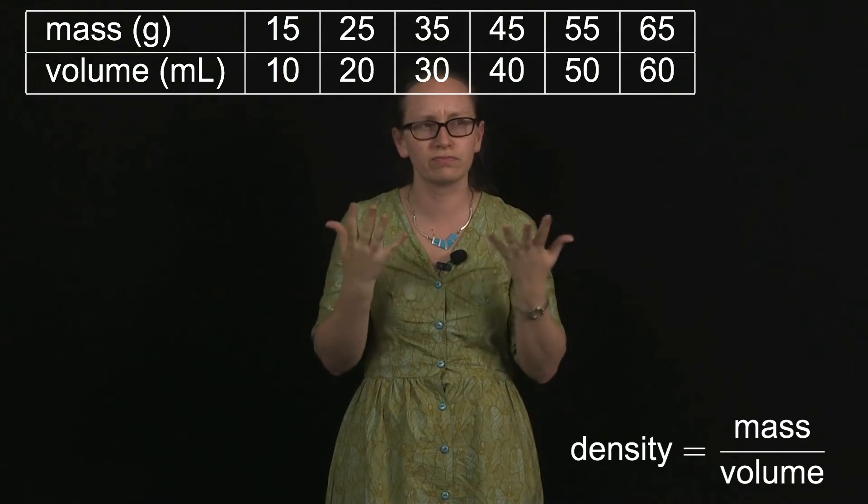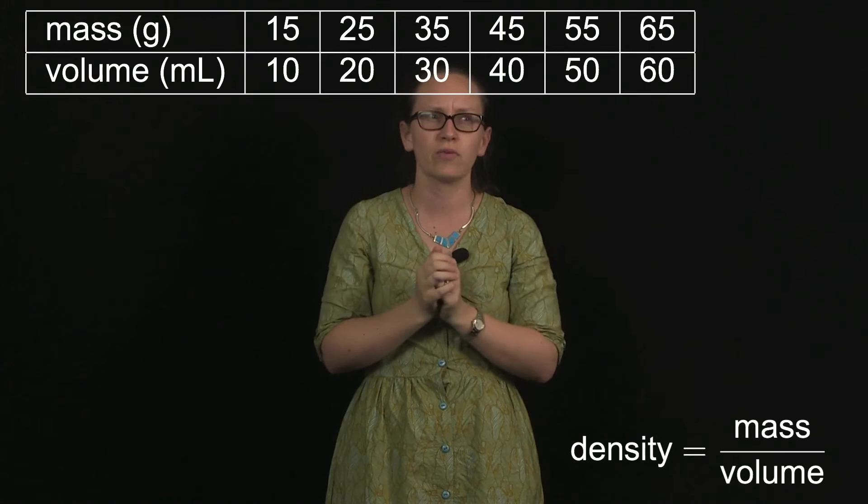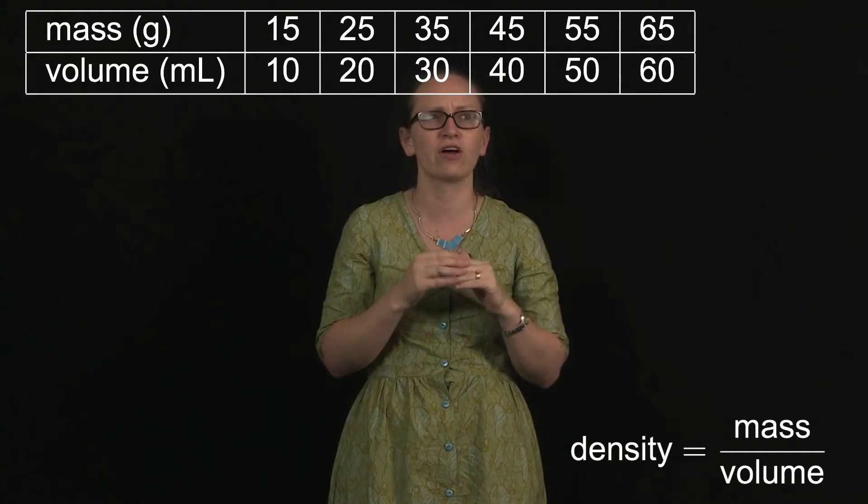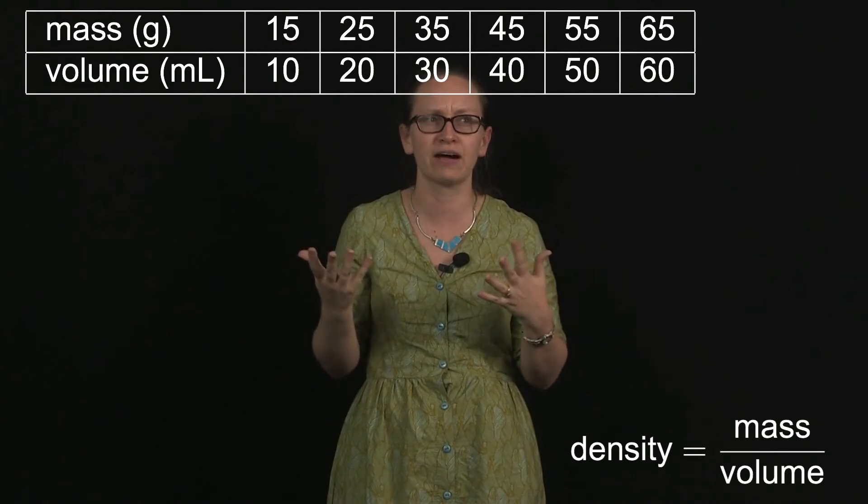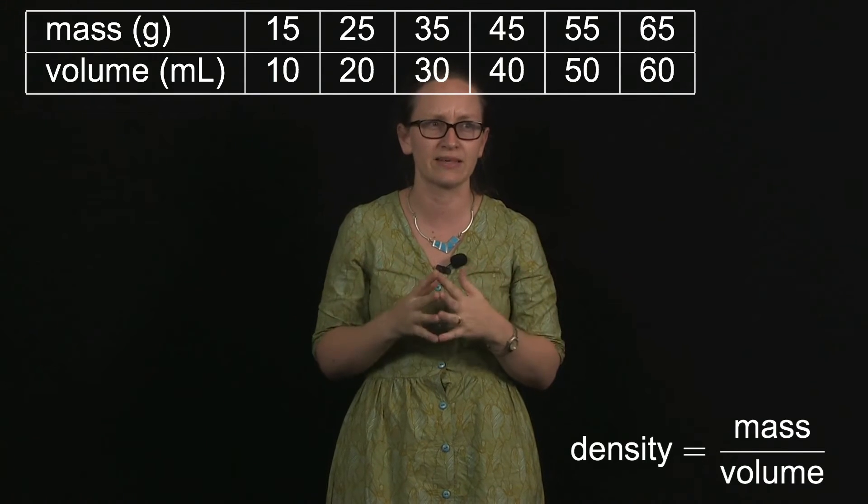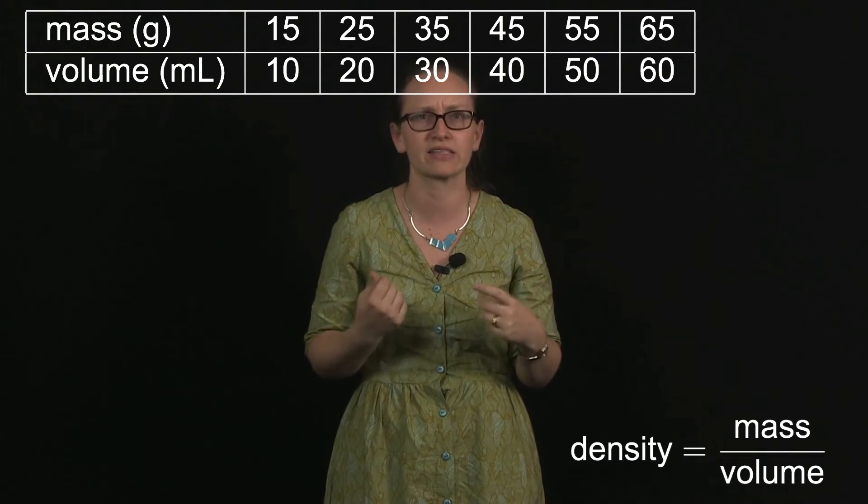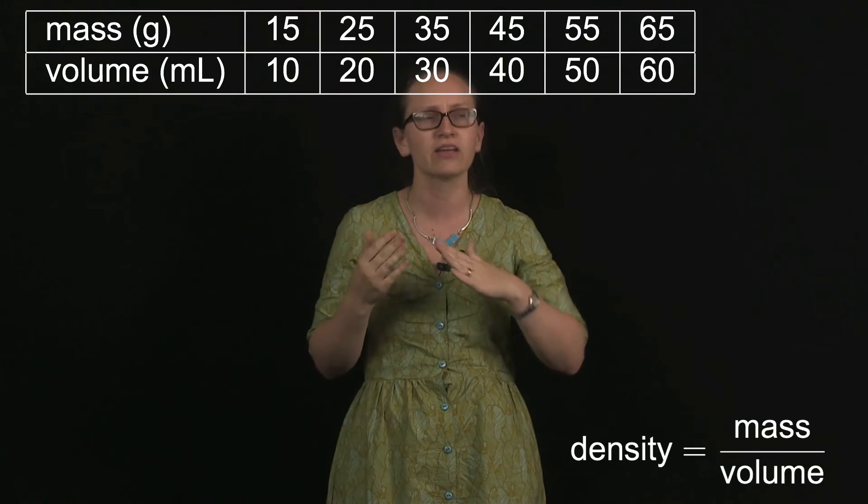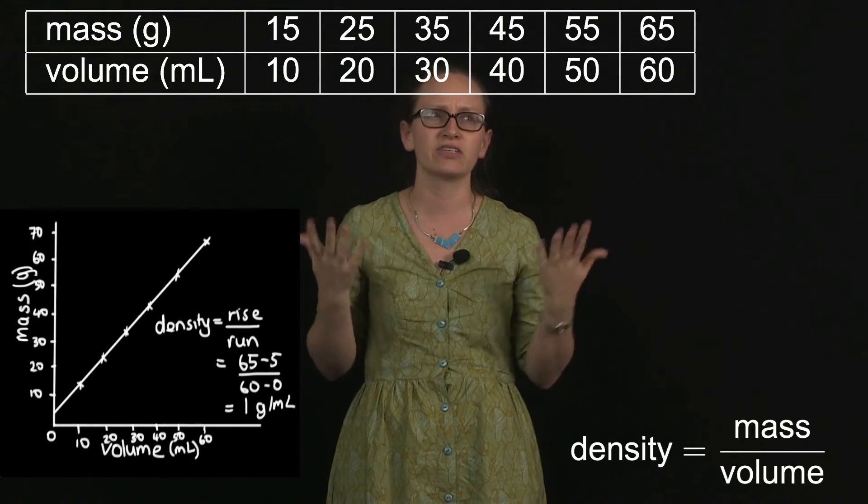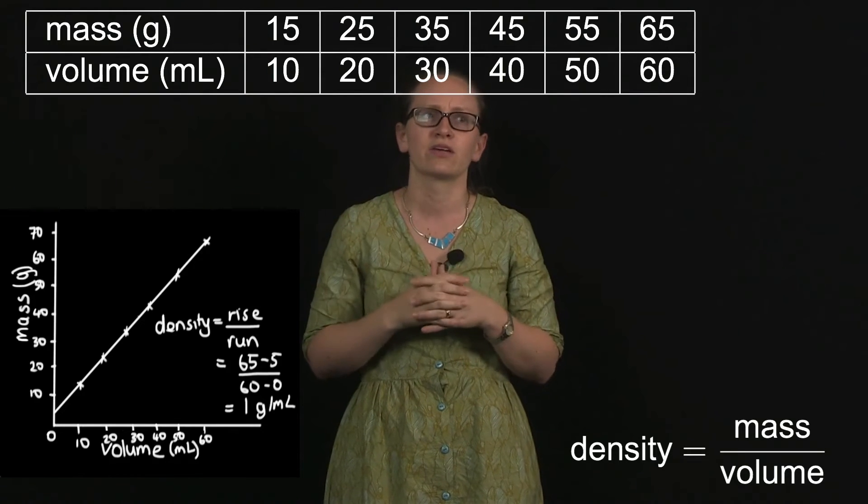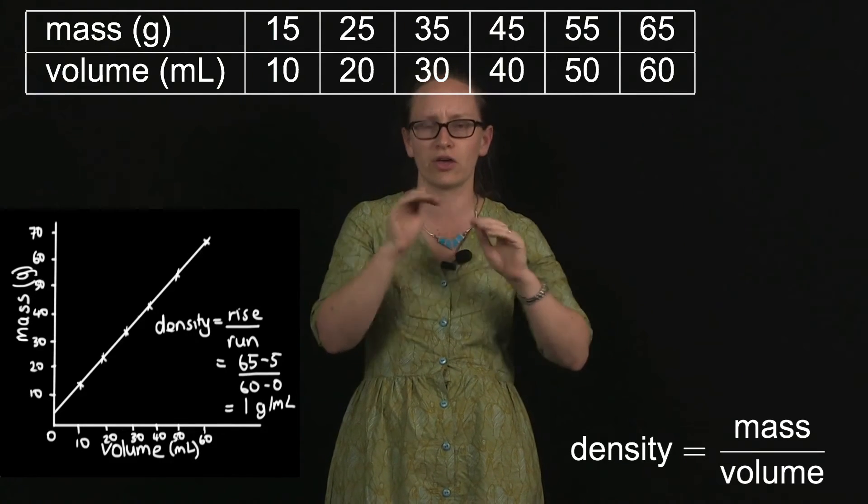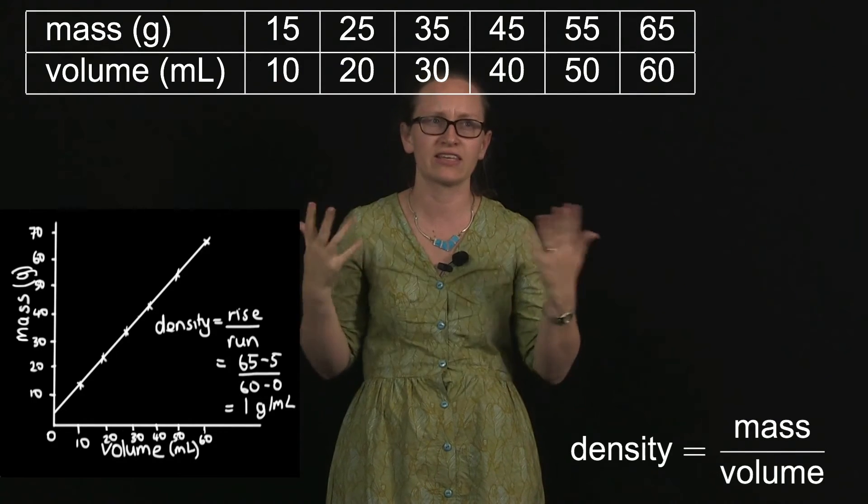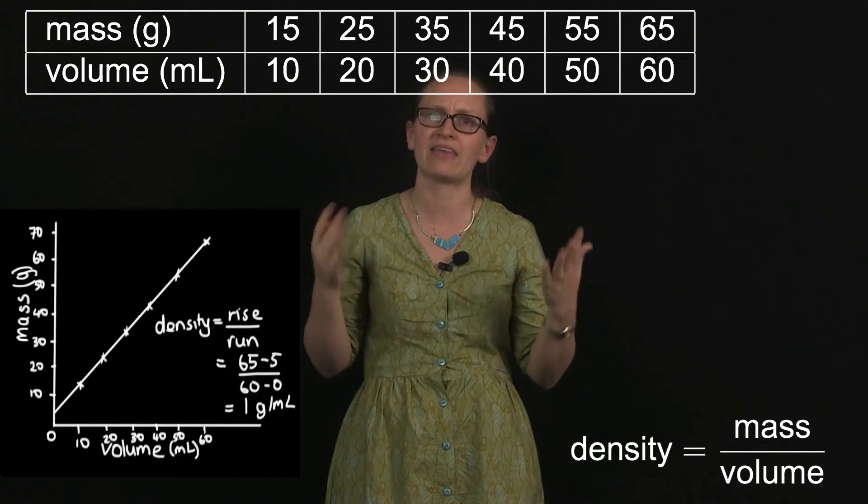Now in order to calculate the gradient what we can do is plot the mass along the y-axis as the rise and the volume along the x-axis as the run. The gradient is then given by the density. In this case each of our masses is five grams too heavy and so this causes our line to actually be shifted up a little bit, but as you can see it doesn't affect the density. So now we can use the gradient of our graph to calculate the density and you can see that this is totally unaffected by that zero error.